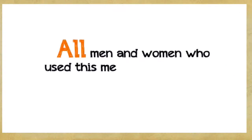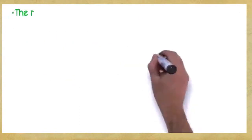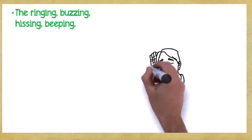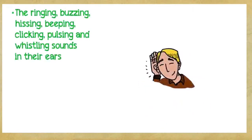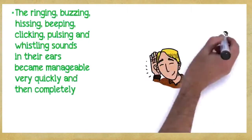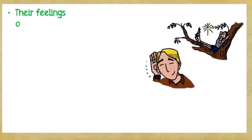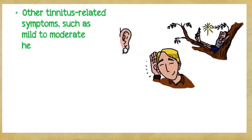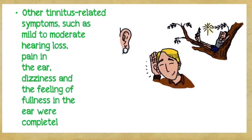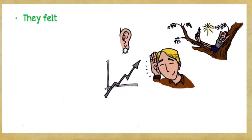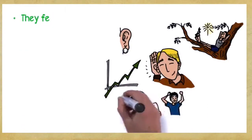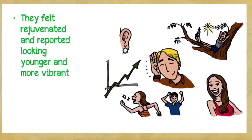All men and women who used this method experienced the following benefits: The ringing, buzzing, hissing, beeping, clicking, pulsing, and whistling sounds in their ears became manageable very quickly and then completely vanished, never to reappear again in less than 30 days. Their feelings of tension, anxiety, agitation, and exhaustion from tinnitus vanished. Other tinnitus-related symptoms such as mild to moderate hearing loss, pain in the ear, dizziness, and the feeling of fullness in the ear were completely eliminated. They felt happier, calmer, and more energetic. They felt rejuvenated and reported looking younger and more vibrant.